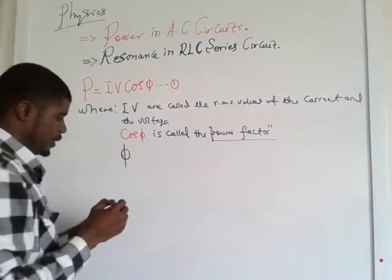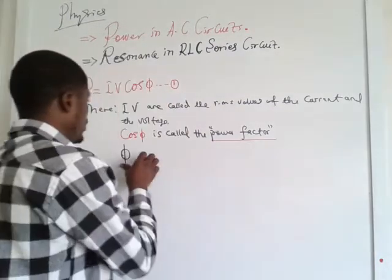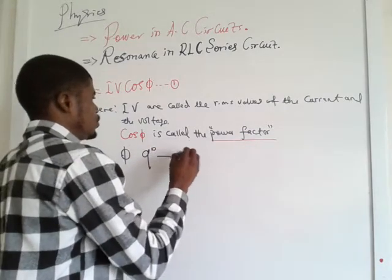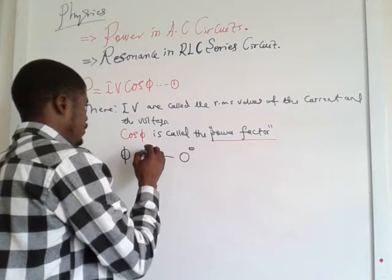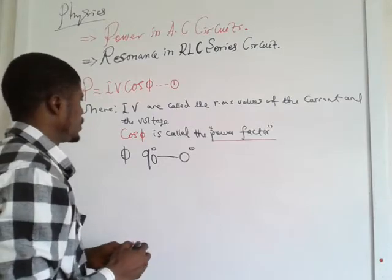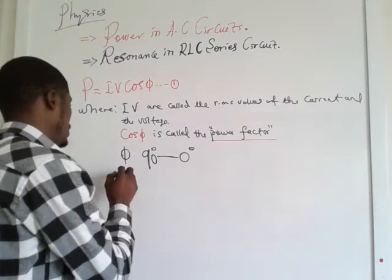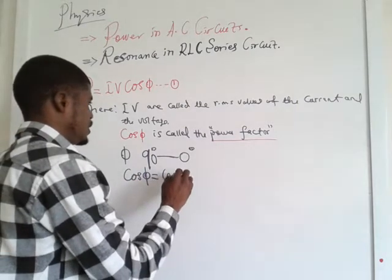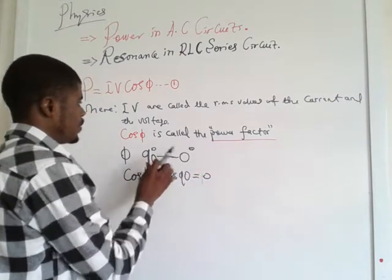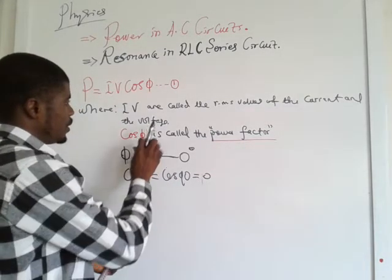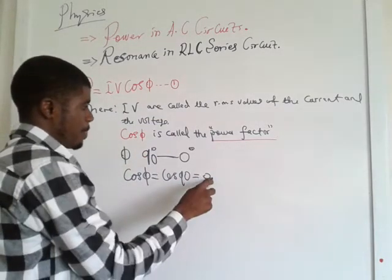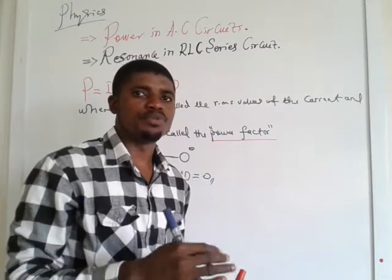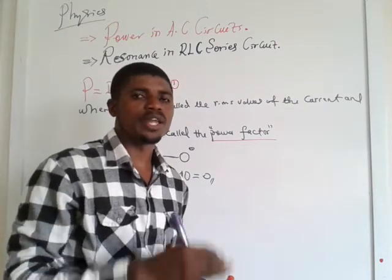The angle φ, which is called the phase difference, varies from 90 to 0 degrees. When the phase difference is 90 degrees, cos φ equals cos 90° equals 0. So when the phase angle is 90 degrees, the power factor is equal to 0. The power factor is 0 when the circuit is a pure capacitor, a pure inductor, or a pure reactance.